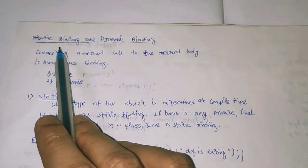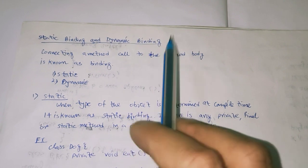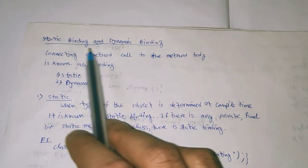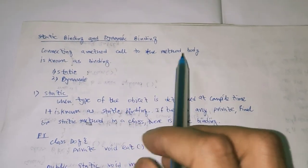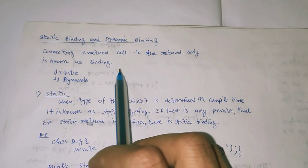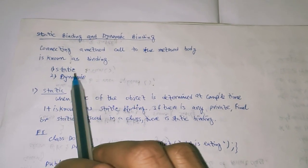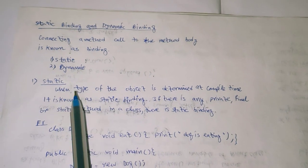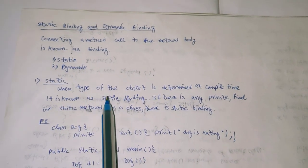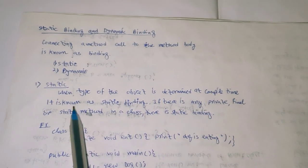Today we are discussing static binding, and next we will discuss dynamic binding. Connecting a method call to the method body is known as binding. There are two types of binding: static binding and dynamic binding. Static binding is when the type of the object is determined at compile time.